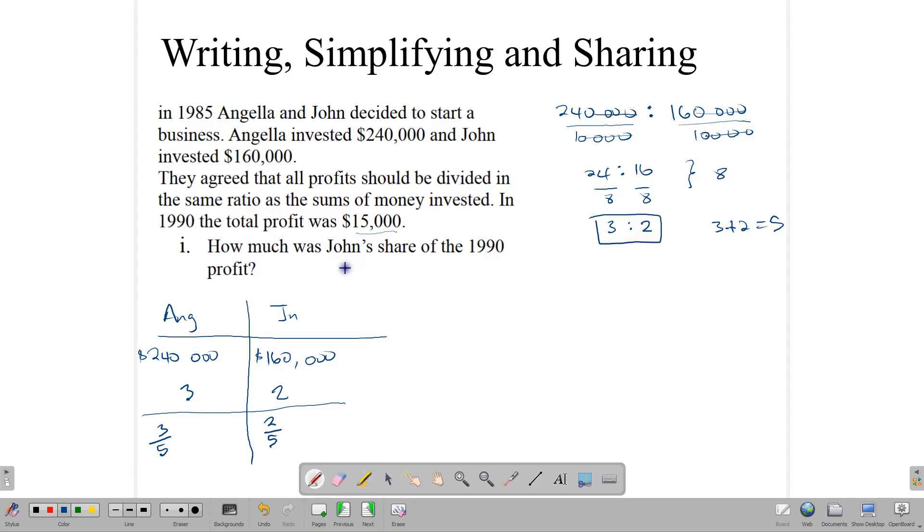The profit that they made was $15,000. That means Angela is going to get 3 fifths of this money, and John is going to get 2 fifths of the same money. We have two ways to do this. John will get 2 fifths of $15,000. Doing some calculations, 5 into 15 goes 3, that gives us $3,000, and 2 times 3,000 gives us $6,000.